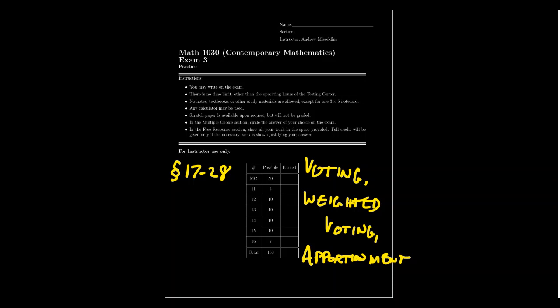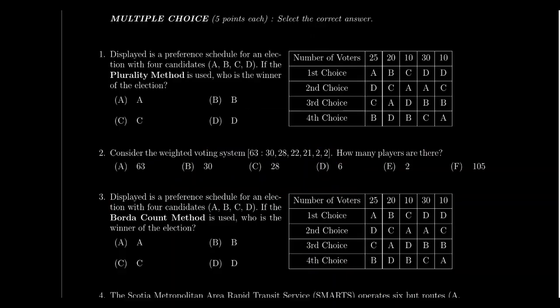Much like the structure of previous exams, there are going to be 15 questions. This exam will have 10 questions in the multiple choice section worth 5 points each, and then 5 questions in the free response section where most are worth about 10 points, although Question 11 is a little easier and worth only 8 points. Let's talk about specific questions you'll see on this exam.